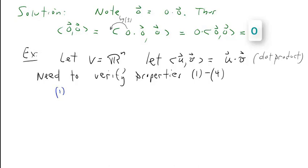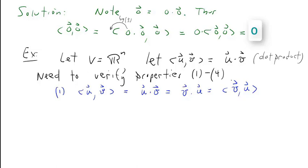In order to demonstrate that this is an inner product, we need to verify properties one through four. Property one, the commutativity property: the inner product of u with v is u dot v, and that equals v dot u by properties of the dot product, which equals the inner product of v with u. Therefore, commutativity holds.